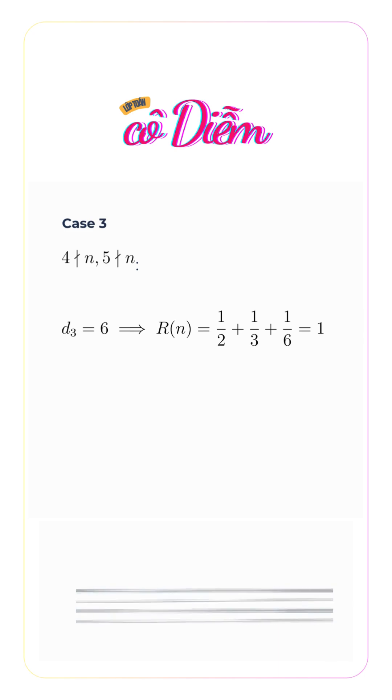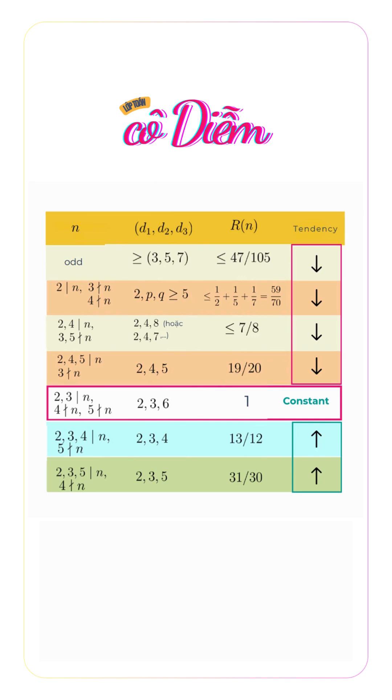If neither 4 nor 5 divides n, then d_3 = 6, and R(n) = 1/2 + 1/3 + 1/6 = 1.